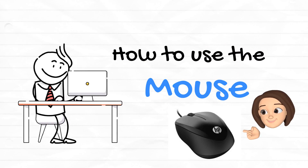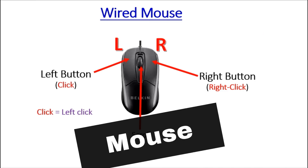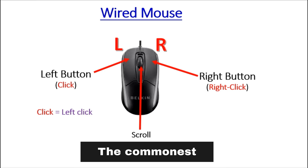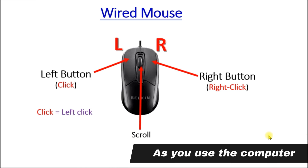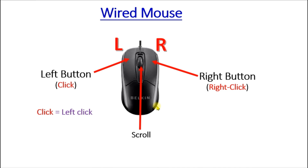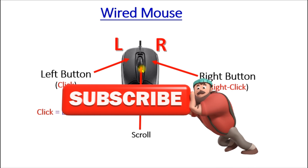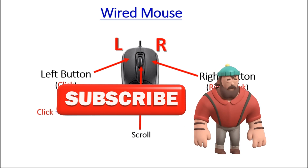How to use the mouse. Here we have the mouse, which is the commonest input device as you use the computer. There is a mouse before us; it has three major buttons. You have the left button, the right button, and the scroll wheel in the middle. You either scroll it away from yourself or towards yourself. So this is the mouse.